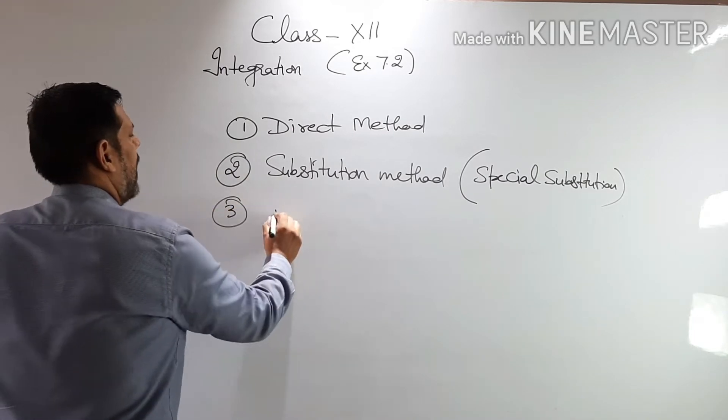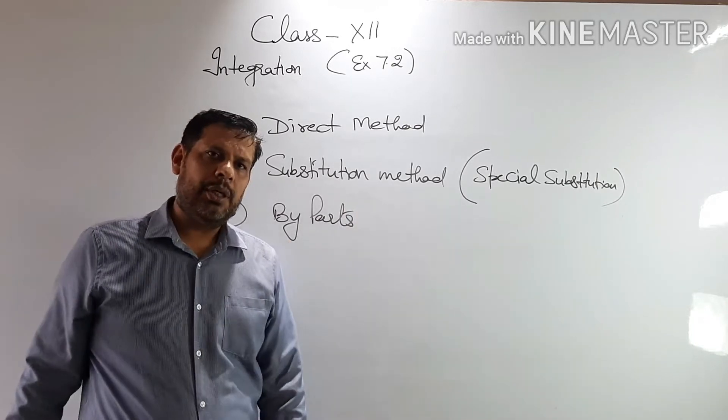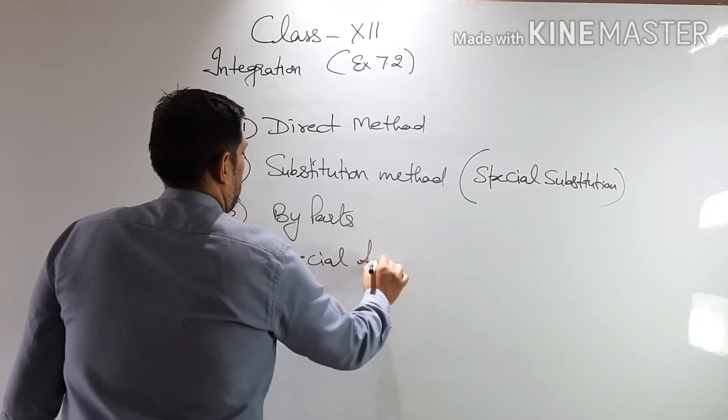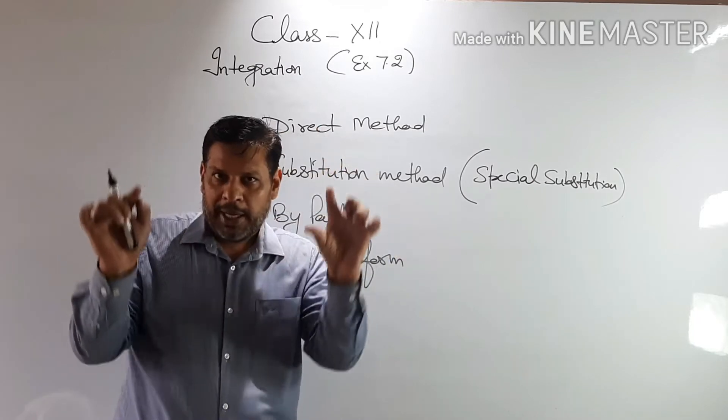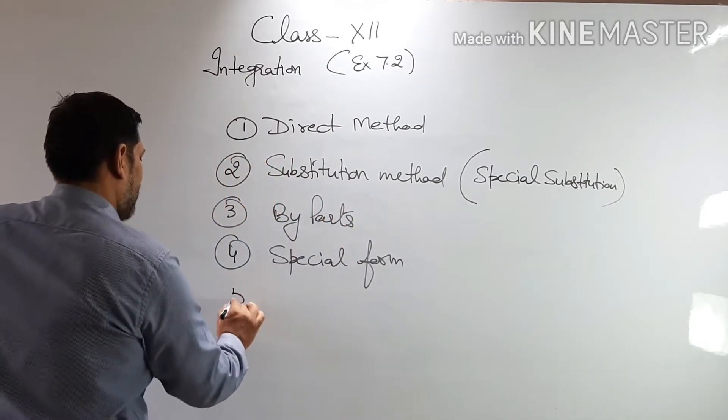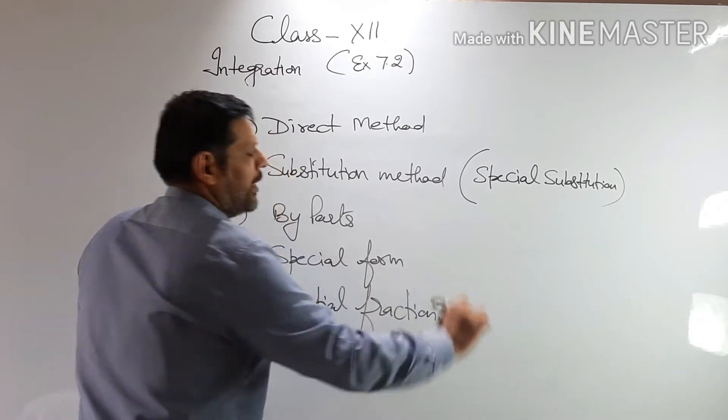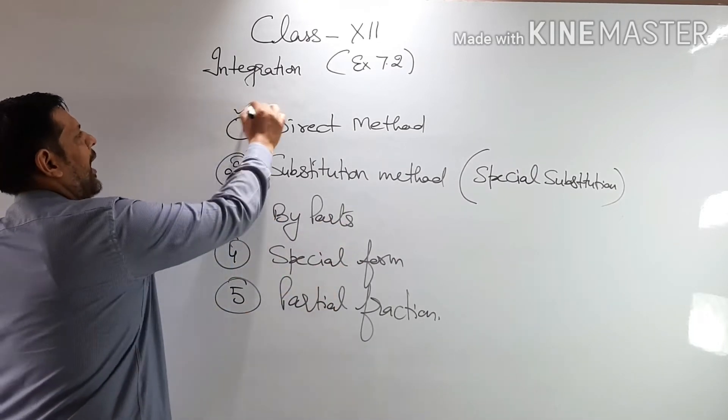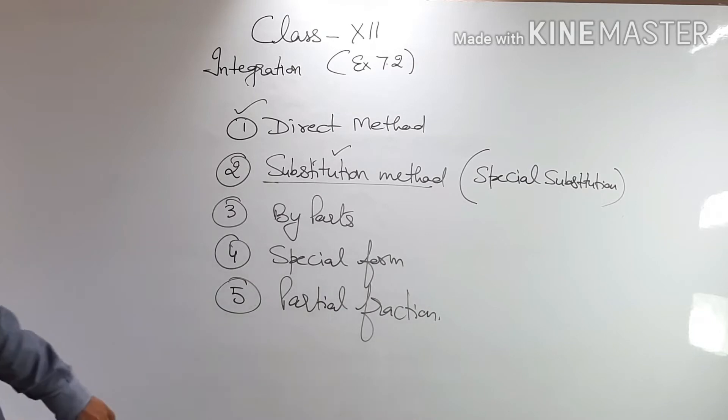The third one is by parts. By parts is the product rule for integration. Number four is special forms. There will be some fixed formulas. You see, if your question is in the shape of that formula, you directly put that formula and you'll get the answer. And number five is the partial fraction.